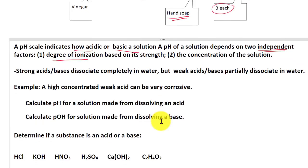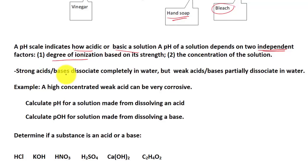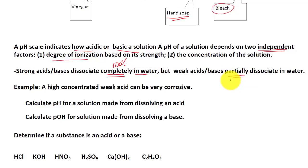Strong acid and base dissociate completely — that means 100% in water. Weak base or acid only partially dissociate — only small amounts or a very small percentage dissociate in water.